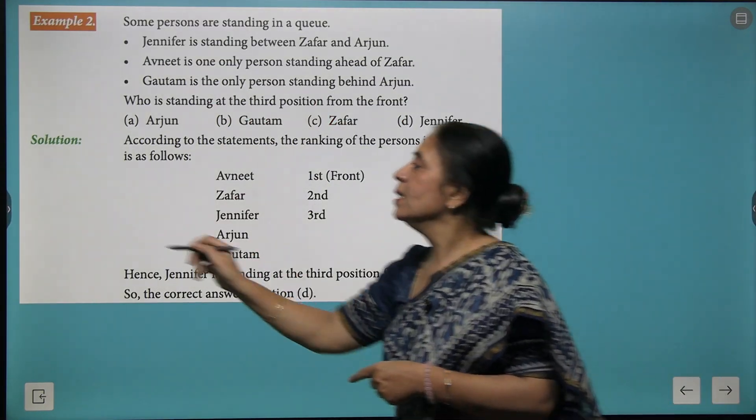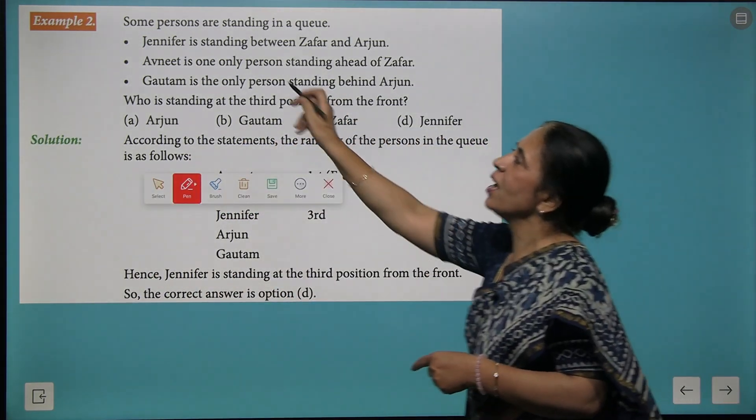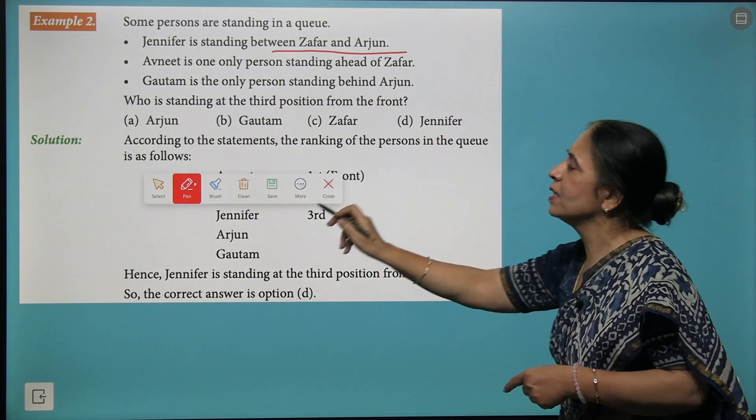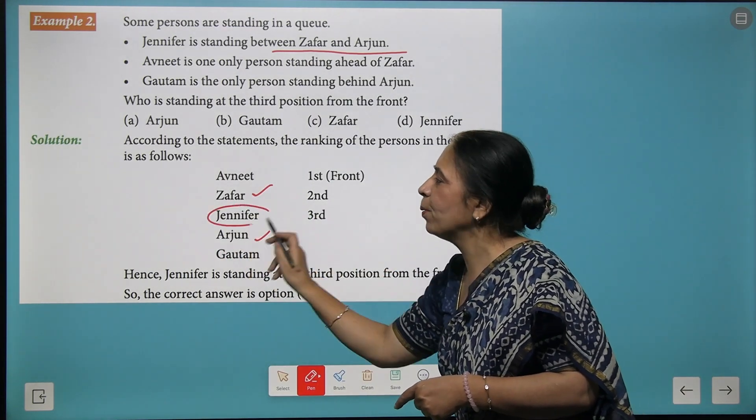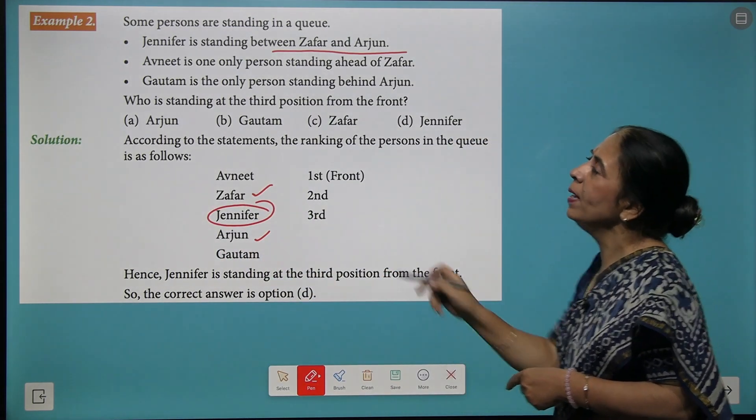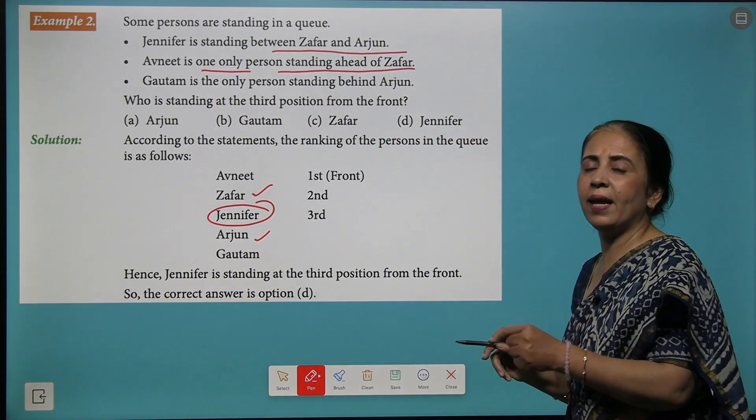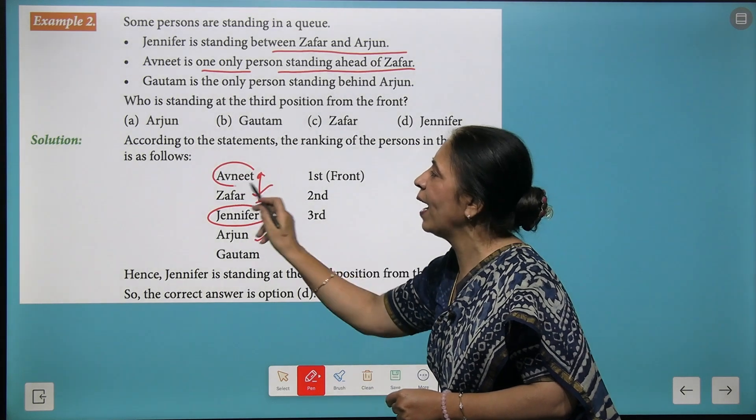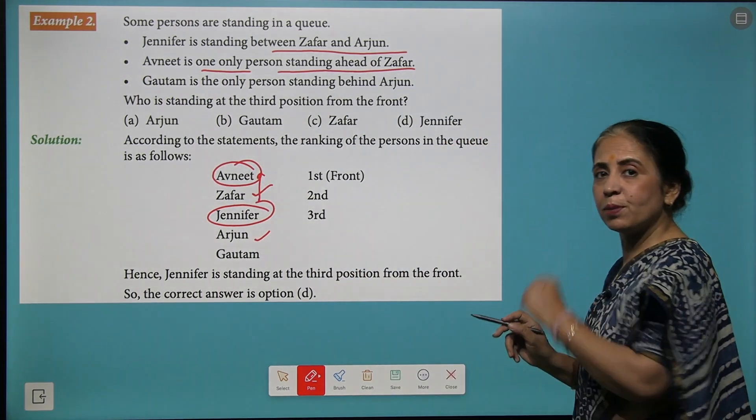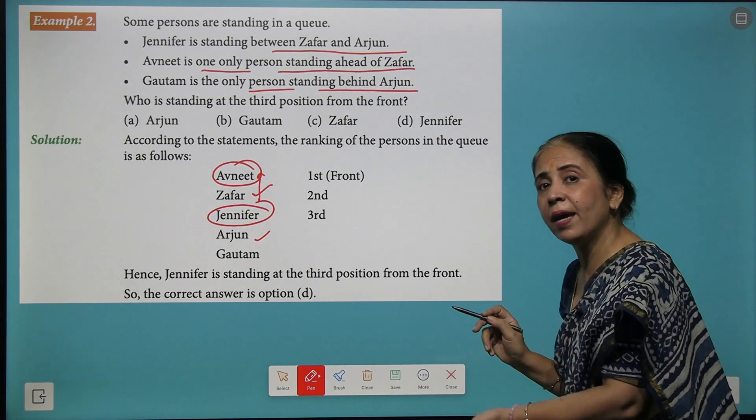Take another interesting question. Some persons are sitting and their details are: Jennifer is standing between Zafar and Arjun. So let's write Zafar, Arjun, and put Jennifer in between them. Then Avneet is the only person standing ahead of Zafar, so before Zafar we write Avneet.